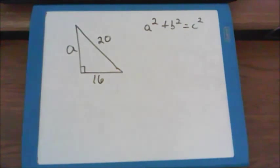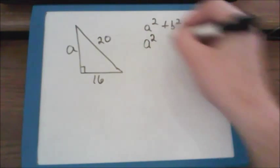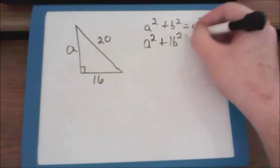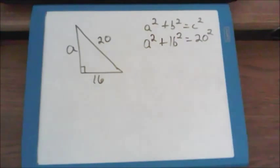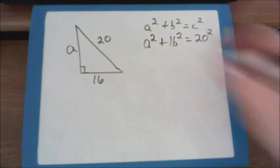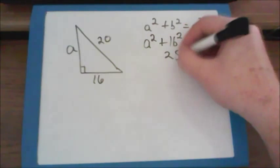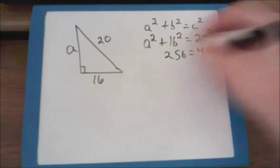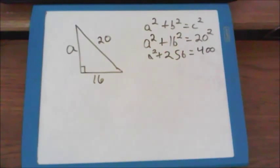The first step is to substitute in the values that I know. I still don't know what a is worth, so I have to leave that part alone. But b is going to be sixteen. And c in this question is going to be twenty. Now I do the squaring step. Sixteen squared gets me to two hundred and fifty-six. While twenty squared gets me to four hundred. And I still don't know what the a is worth, so I can't square it, so it just has to stay a squared.